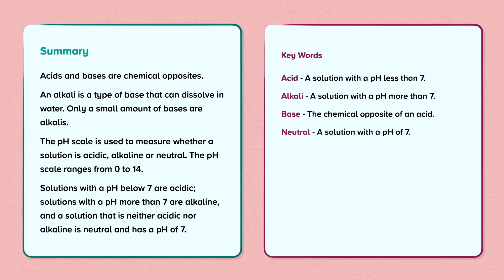Neutral: a solution with a pH of 7. pH scale: a scale to show how acidic or alkaline a solution is, or if it is neutral.